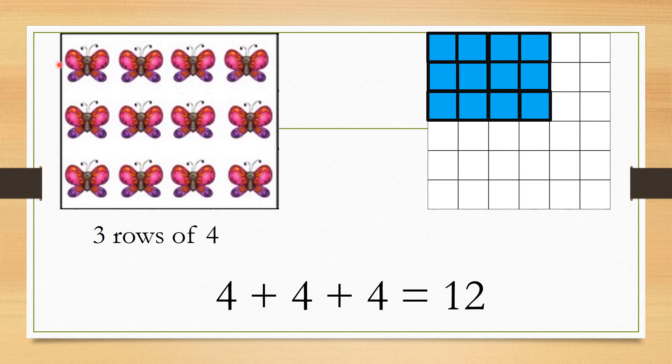As we said, rows move from left to right. So how many rows do I have here? One, two, three - I have three rows. Now how many butterflies do I have in each row? I will count: one, two, three, four. So I have four butterflies in each row. I will say three rows of four.